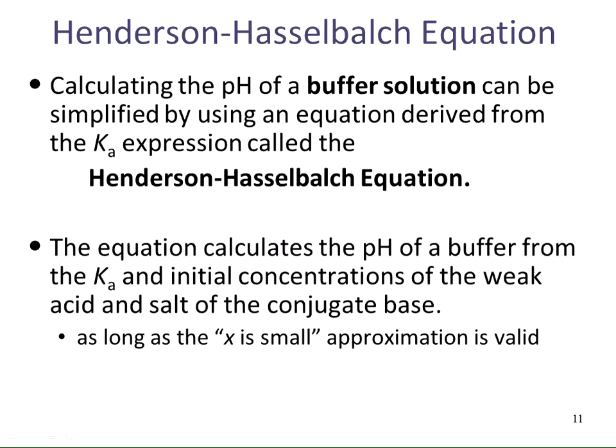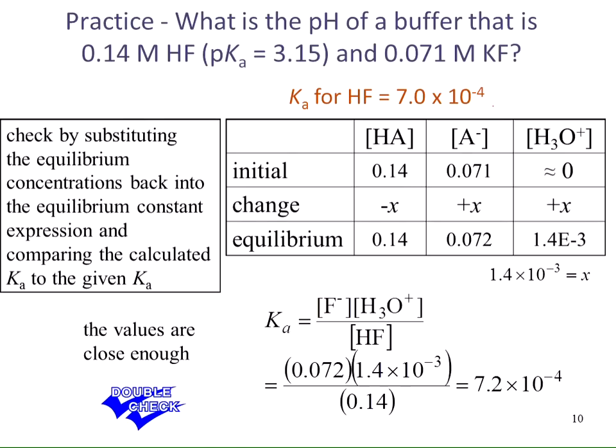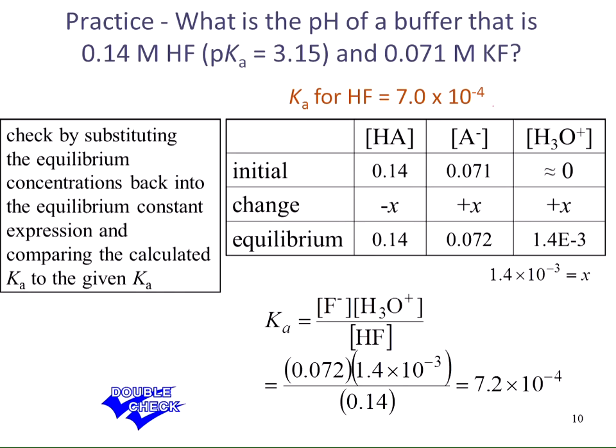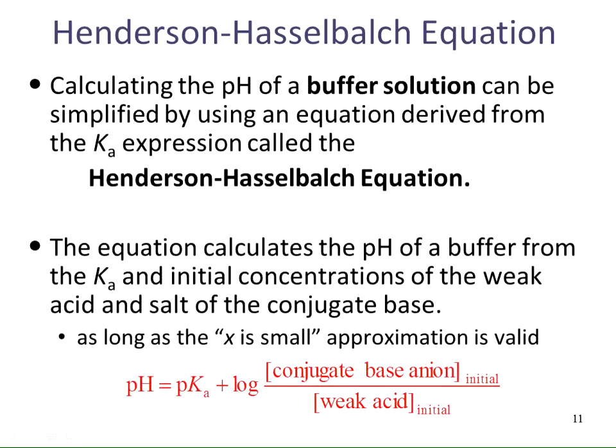Unless the problem tells you that you have a buffer system, or you calculate limiting reagents and find excess weak acid with some strong base, or excess weak base with some strong acid — unless you have those conditions, you can't use the Henderson-Hasselbalch equation. The ICE table method works every single time with every system. The Henderson-Hasselbalch only works for a buffer system, so you must be sure you have a buffer before using it.